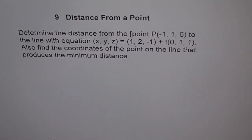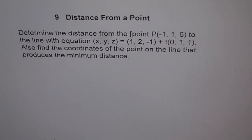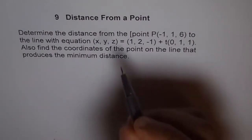Distance from a point. Determine the distance from the point P to the line with the equation XYZ equals 1, 2, minus 1 plus T times 0, 1, 1. Also find the coordinates of the point on the line that produces minimum distance.